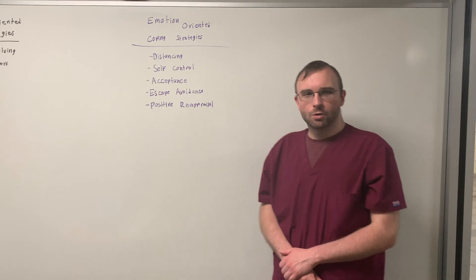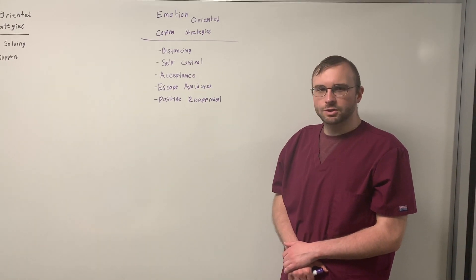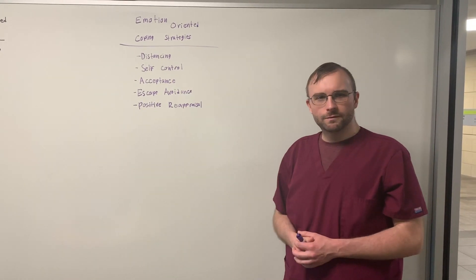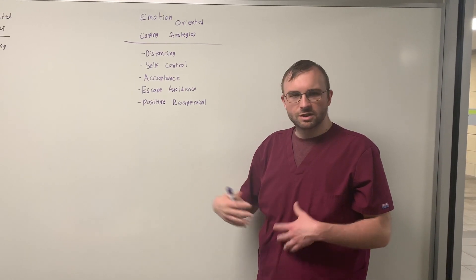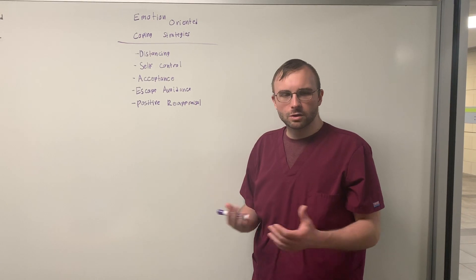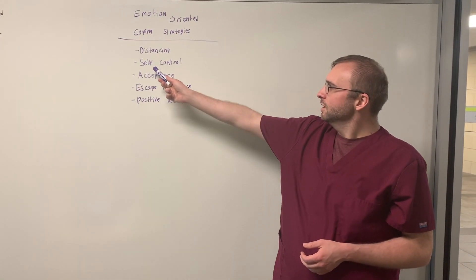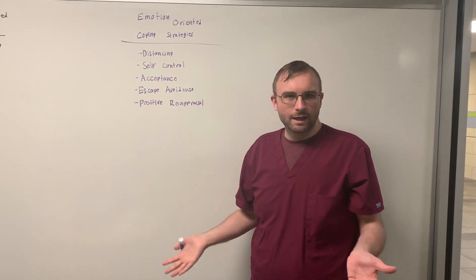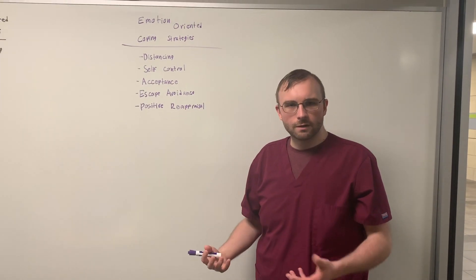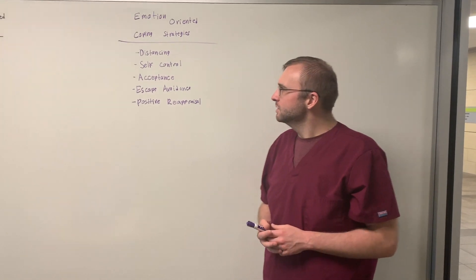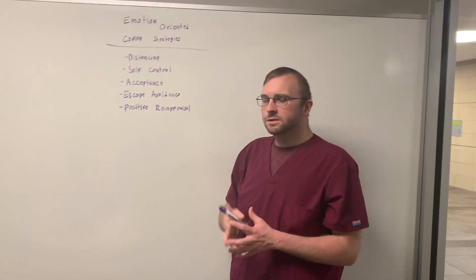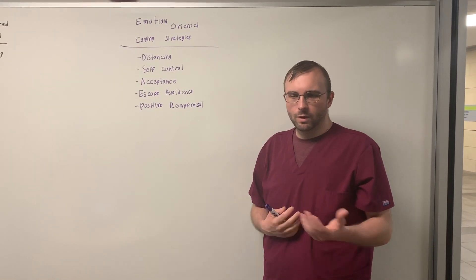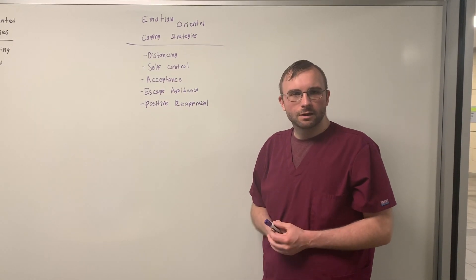There are also emotion-oriented coping strategies that nurses utilize. Distancing yourself — emotionally distancing yourself from the situation. Practicing self-control — when you're about to have a really negative emotion, you calm yourself, like detachment from the situation, like meditating in place. Acceptance — you just accept that you made a mistake or something went wrong, but you don't dwell on it. This can be a really tough one.